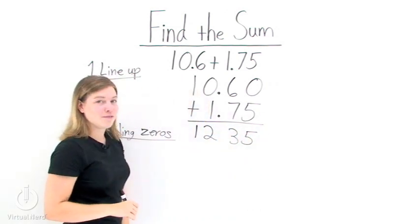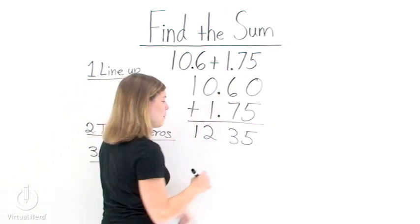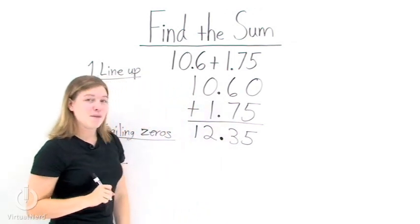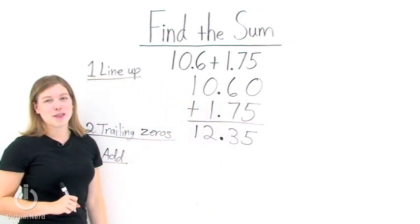Now the decimal point. To put the decimal point in our answer, just follow the line of decimal points and add a decimal point in that same location in our answer. So we get an answer of 12.35.